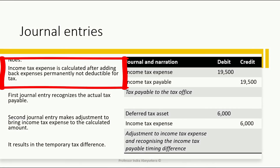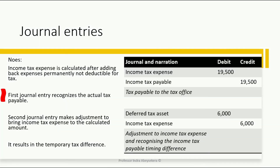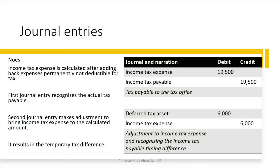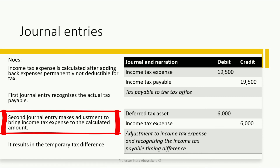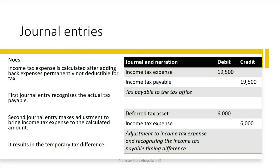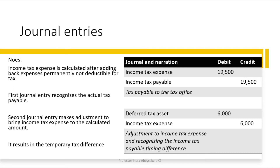Income tax expense is calculated after adding back expenses that are permanently not deductible for tax. The first journal entry recognizes the actual tax payable. The second journal entry makes an adjustment to bring income tax expense down to the calculated amount, resulting in the recognition of a temporary tax difference. This brings us to the end of the video. Thanks for watching.